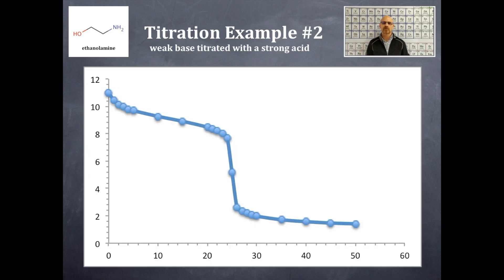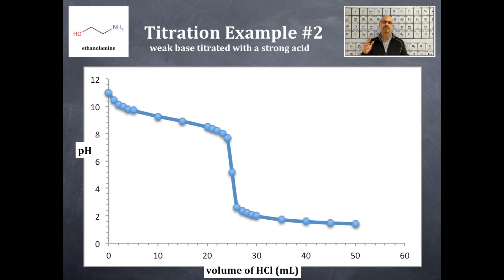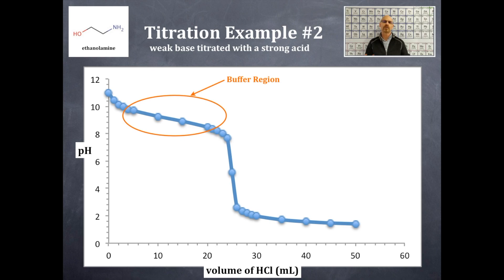Let's look at what this will look like graphically. The graph is very similar in that the y-axis is pH. The x-axis is going to be the volume of the strong acid that you're titrating it with, which in this case is going to be hydrochloric acid — HCl. You should see that it takes a significant amount of volume of acid in order for that pH to change drastically.